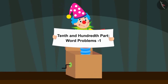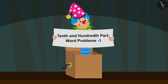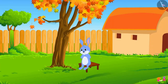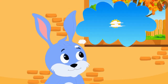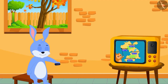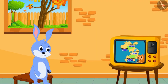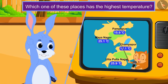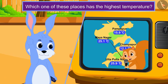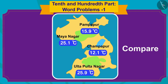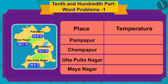In this video, we will learn to solve some interesting word problems related to the tenth and hundredth part. Bunny is thinking that he will go for a vacation with Babban. The winters in Champapur are getting very cold, so Bunny wants to go to a place where the temperature is the highest. Bunny started thinking: which place has the highest temperature? Children, let us help Bunny. To find the place with the highest temperature, we have to compare the temperature in degrees Celsius shown for these places. Let's look at an easy process to do this.